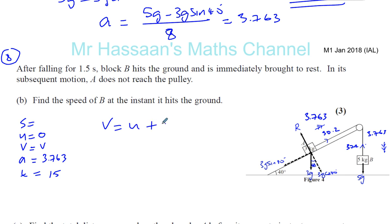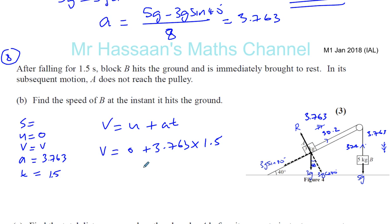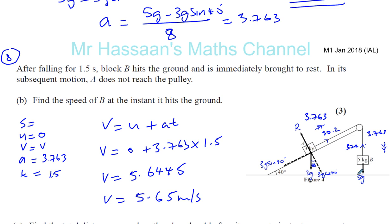V equals U plus AT. So V is equal to U, which is 0, plus A, which is 3.763, times 1.5 seconds. You take 3.763 and multiply by 1.5. That gives you your answer, which is 5.6445 — so to 3 significant figures, 5.65 meters per second is the speed of particle B at the instant that it hits the ground.